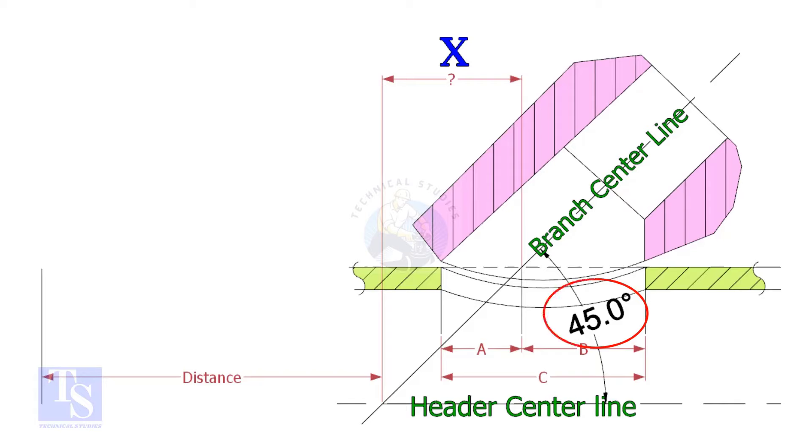If the including angle is 45 degrees, the value of X will always be half OD of the header. Suppose the OD of the header is 400 mm, then the value of X will be 200 mm.